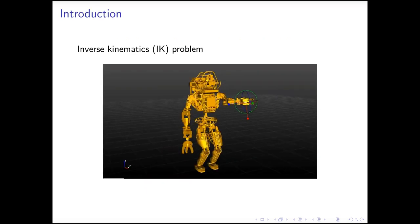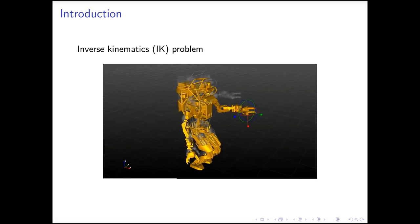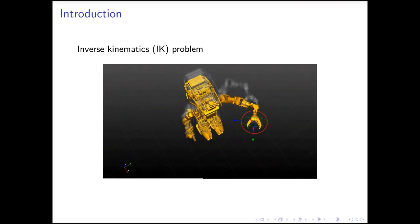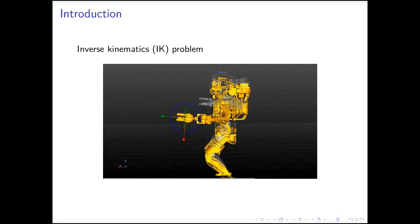In inverse kinematics, we want to find robot postures satisfying certain constraints. In this video example, we want the robot hand to reach a certain pose, while keeping its center of mass above the foot support region.